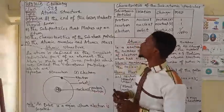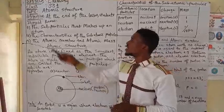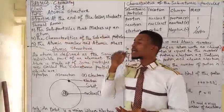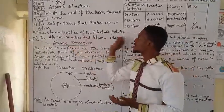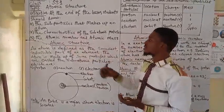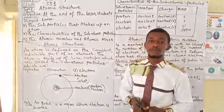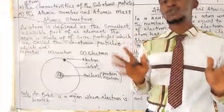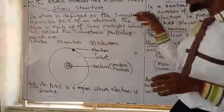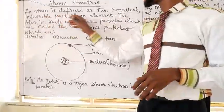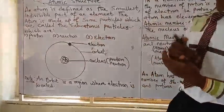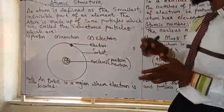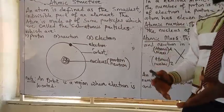Our objective: at the end of the lesson, students should know the subatomic particles that make up an atom — that is the particles found in an atom — the characteristics of the subatomic particles, the atomic numbers and the atomic mass. Now let's look at the definition of an atom. An atom is defined as the smallest indivisible part of an element — that is, the atom is the smallest part of an element. The atom is made up of some particles which are called the subatomic particles.